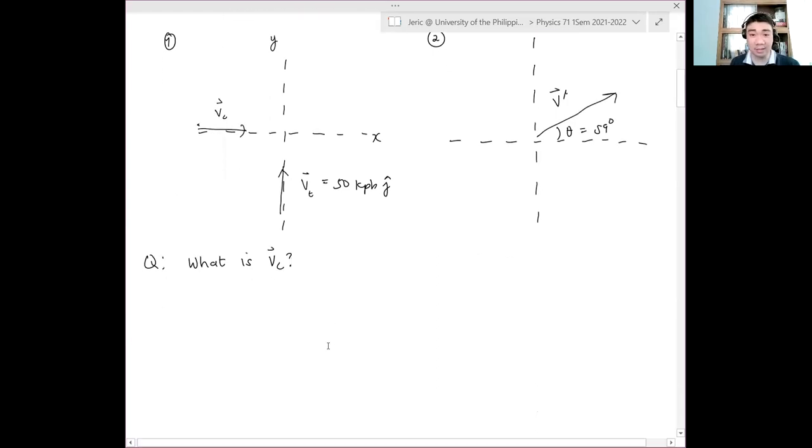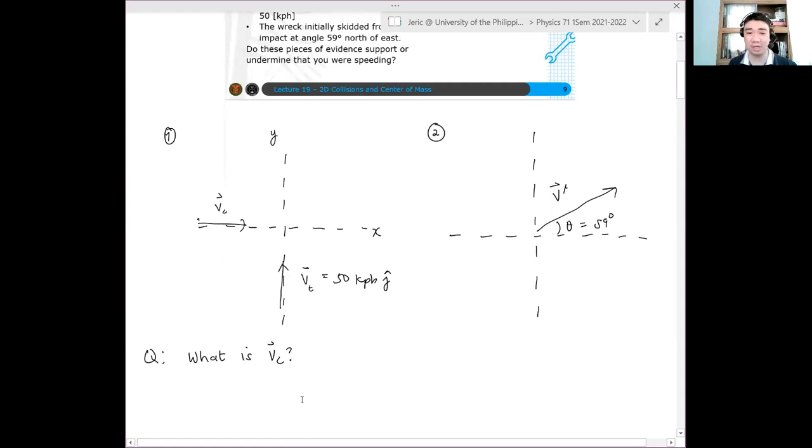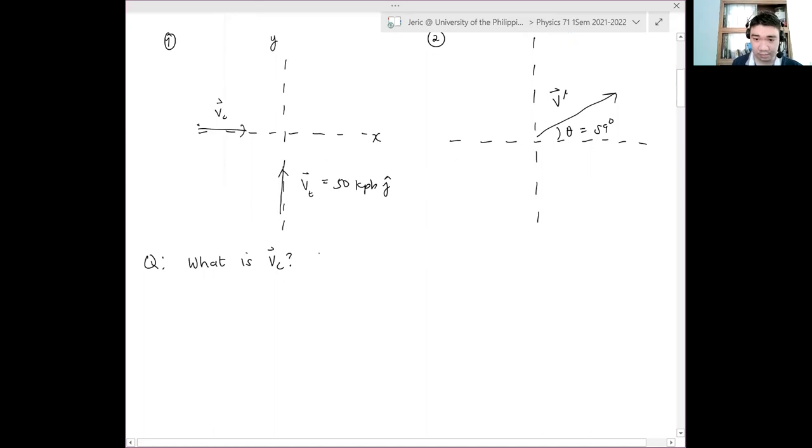Now, so we know that this is a collision problem. And what type of collision is this? What type of collision is this? What type of collision is this? It's very inelastic. It's inelastic, but is it partially inelastic or perfectly inelastic? Perfectly. Yes, perfectly inelastic because the two parts stick together.